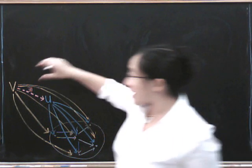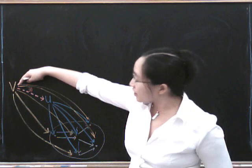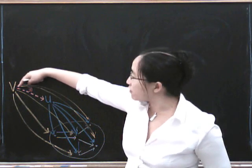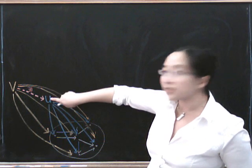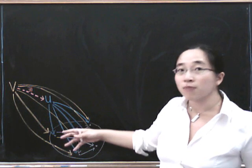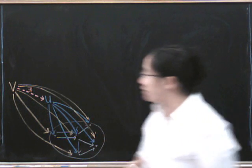That says that given any other cone like this orange one for example, there's a unique factorisation, this pink map going from V to U. So U is for universal here, this blue cone is supposed to be my universal one, and it's universal among all cones. So there's this unique factorisation.